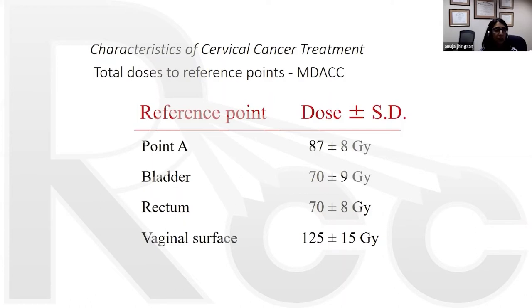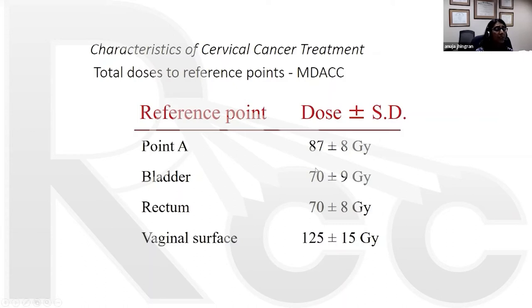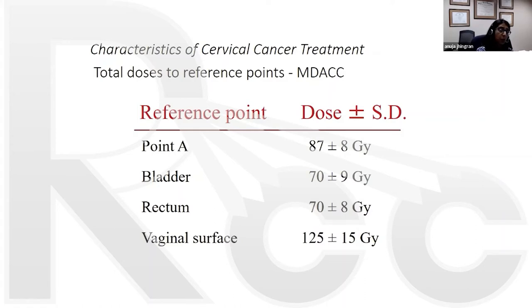Your reference dose is Point A — you should get 85 Gy or above. Bladder is 80 plus or minus 10, so you can go up to 90 to the bladder point. Rectum is 70 plus or minus 10, and the vaginal surface dose is 100 plus or minus 15. Those are the key film-based dose references.